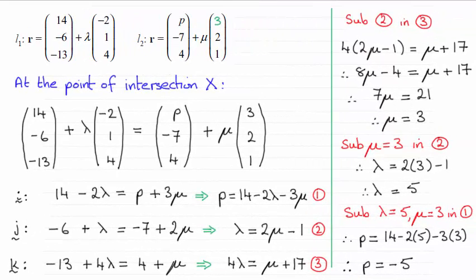Hi there. Now for this part of the question we were told that these two lines L1 and L2 intersect at the point X and we had to find the value of P here.